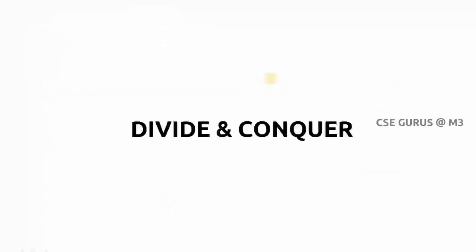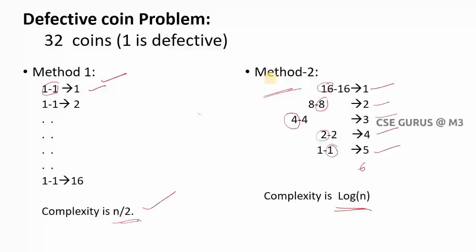This is the basic example to understand divide and conquer. First, the problem is divided into equal parts — two sub-problems, like 16 and 16. If the sub-problem is still too large to solve directly, we divide again into 8 and 8. We keep dividing until the problem is small enough — down to one coin on each side — so we can identify the defective one.